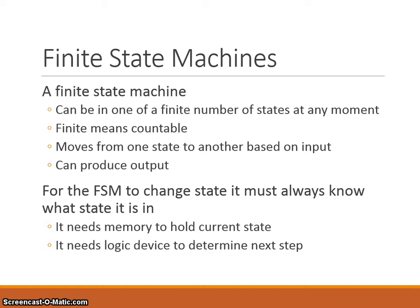A finite state machine is often summarised as FSM. In summary, this is any device that stores its current status and whose status can change as the result of an input. It's mainly used as a conceptual model for designing and describing systems. It needs memory to hold its current state and usually uses a logic device to determine the next state.